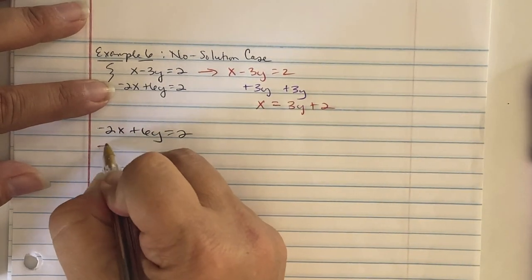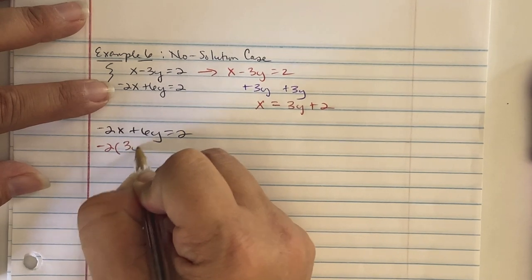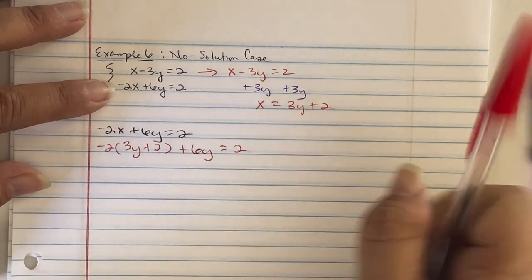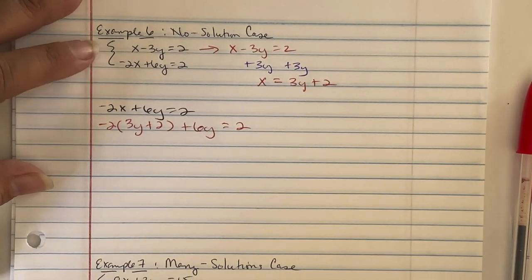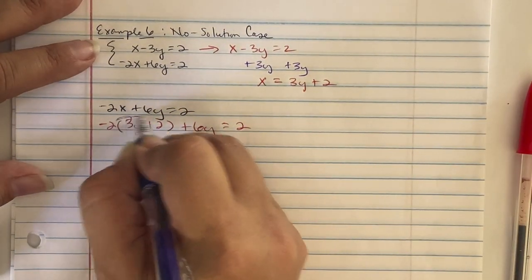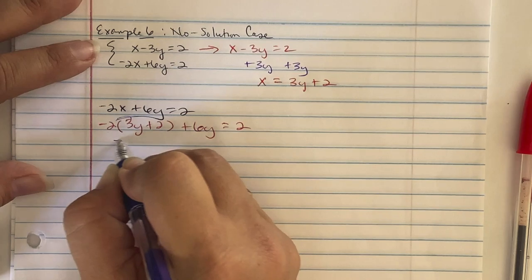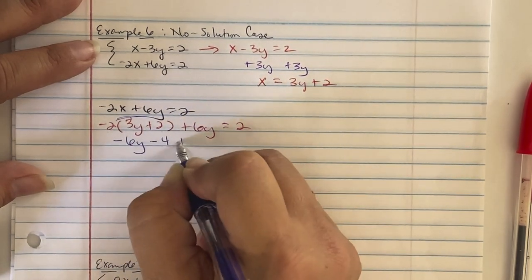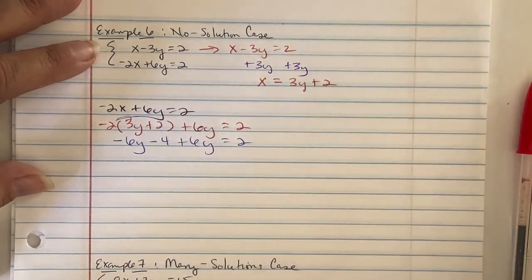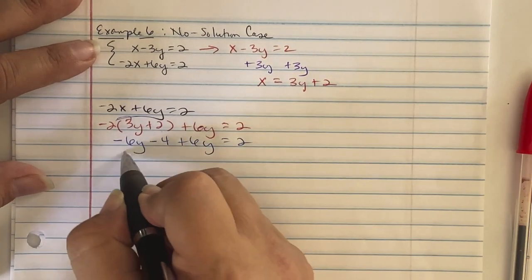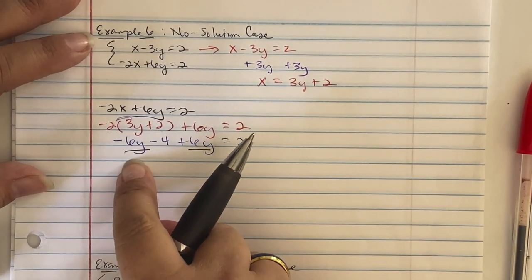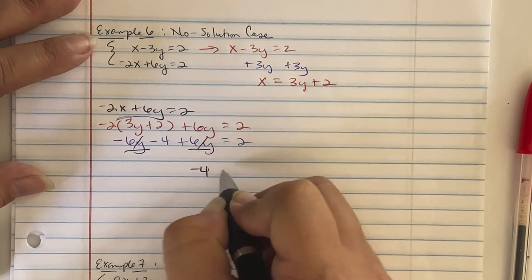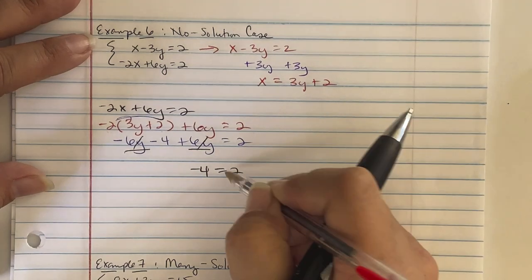Substituting into negative 2x plus 6y equals 2: we write negative 2 times (3y plus 2) plus 6y equals 2. Distributing: negative 2 times 3y is negative 6y, and negative 2 times 2 is negative 4, so negative 6y minus 4 plus 6y equals 2. The y terms cancel out, leaving negative 4 equals 2, which is not possible.